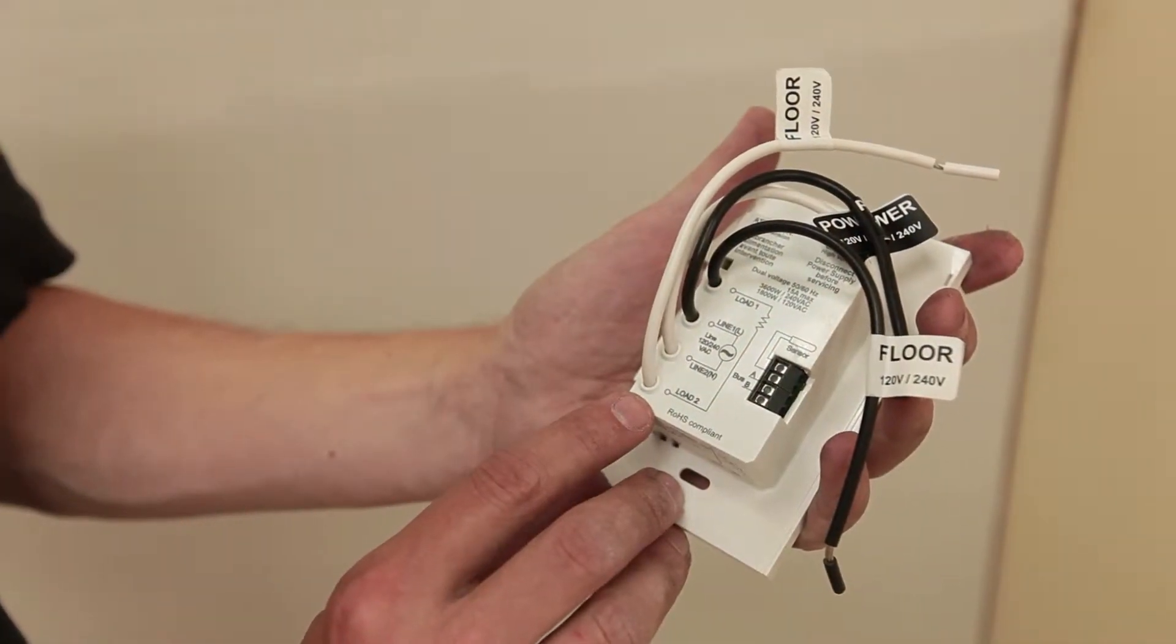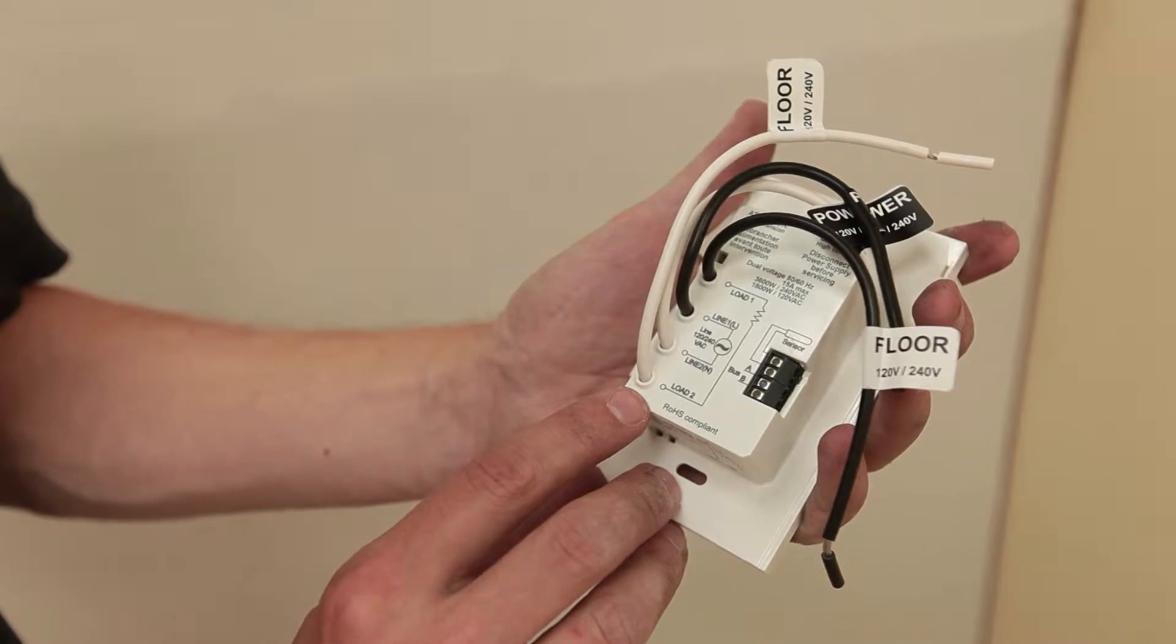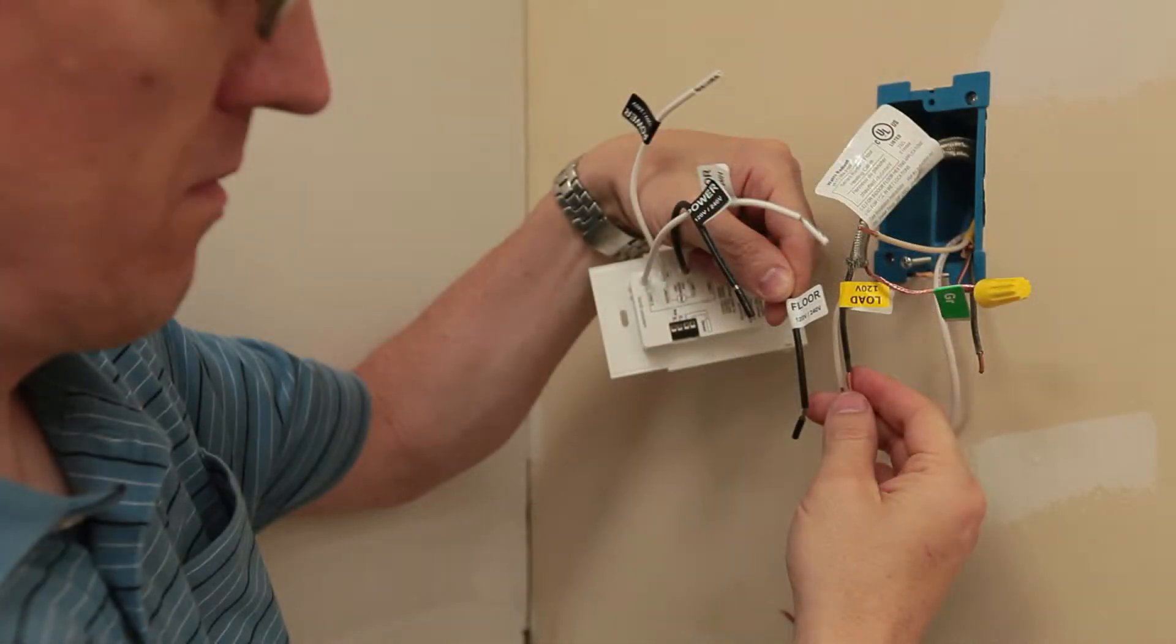Use the diagram on the back of the SunStat to identify which wires are line and which are load. Connect the black wire from the warm wire power leads to the black load wire from the SunStat using a wire nut.